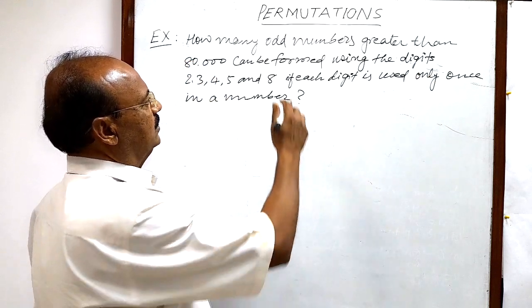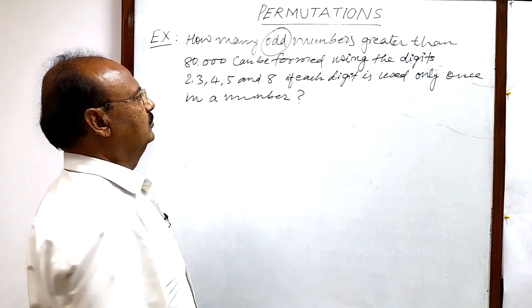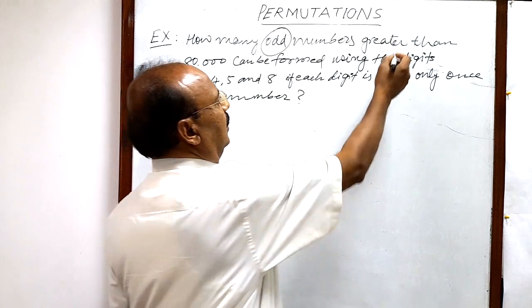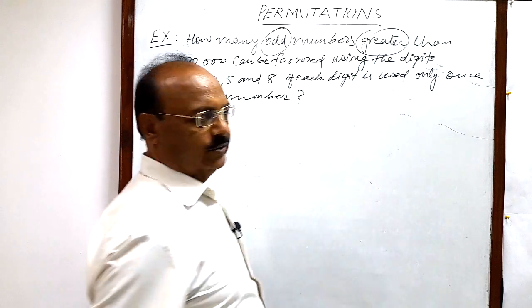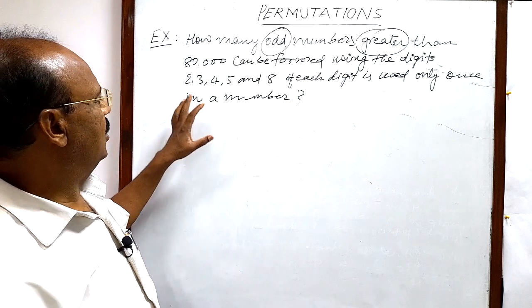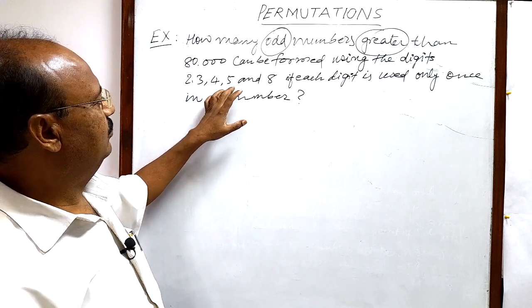The numbers should be odd numbers first. Secondly, numbers should be greater than 80,000. So we have total given digits how many? 1, 2, 3, 4, 5.